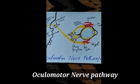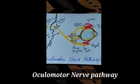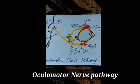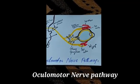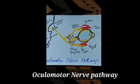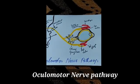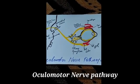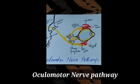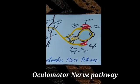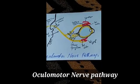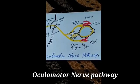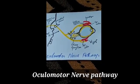The superior branch supplies the superior oblique, superior rectus, and levator palpebrae muscles. The inferior branch supplies the ciliary ganglion, inferior rectus, and inferior oblique muscles. The ciliary ganglion supplies the ciliary muscles.